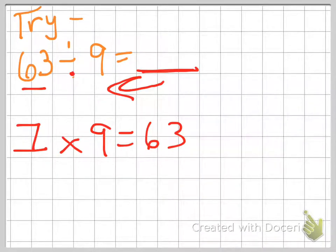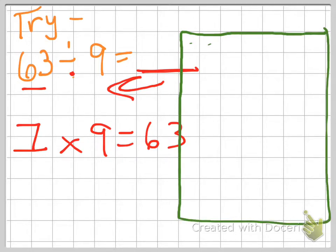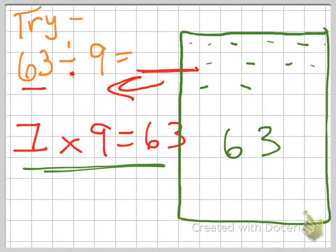But you could always draw a grid as well. We go down 9 rows — 1, 2, 3, 4, 5, 6, 7, 8, 9 — and we need 63, so we go across 7 columns: 1, 2, 3, 4, 5, 6, 7. If you count all the way through, there are 7 in each group and you get 63. So you can use a grid — basically an array — or use multiplication facts; either way it works.